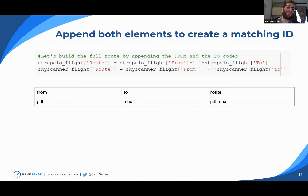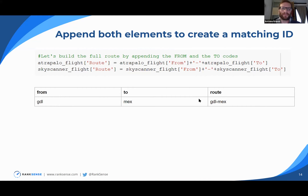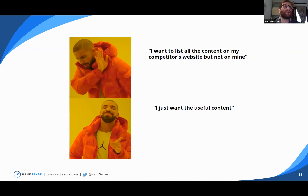At this step I've extracted the origin airport and destination airport. I want to append this information to get the full route — this is like the CONCATENATE function in Google Sheets or Excel, where I concatenate the origin airport, a hyphen, and the destination airport to create the full route identifier. One important reminder of the objective: I don't just want to list all the content my competitor has that I don't. If they're generating useless content, I don't care. I want to list the useful content — content that can rank and generate sessions and, ultimately, revenue.